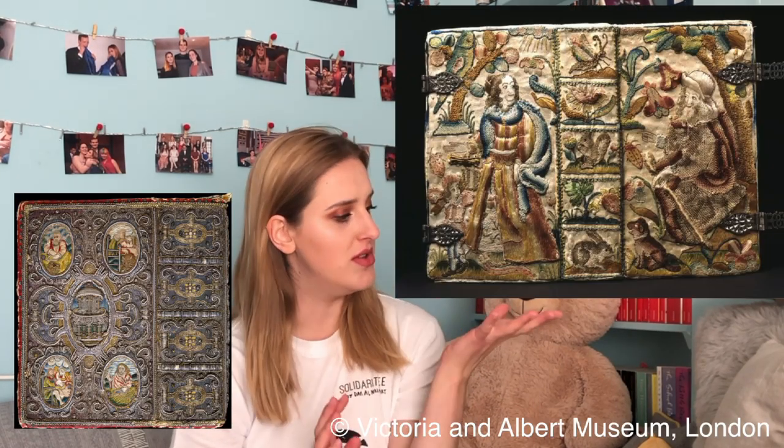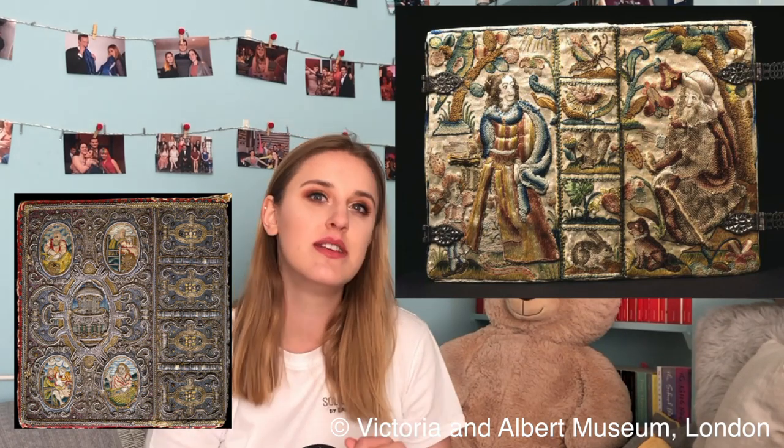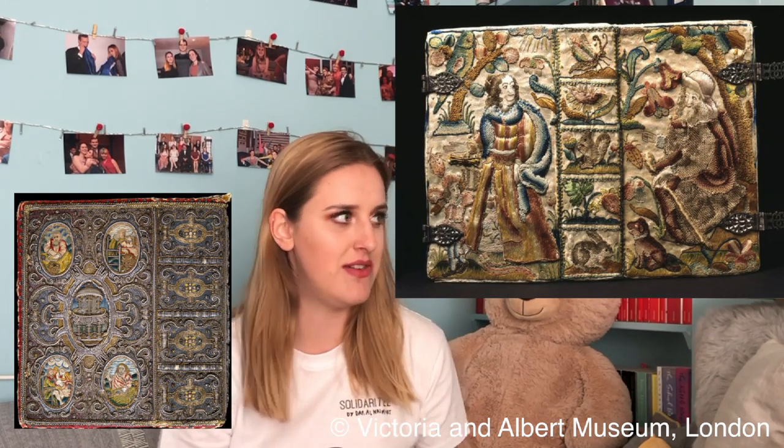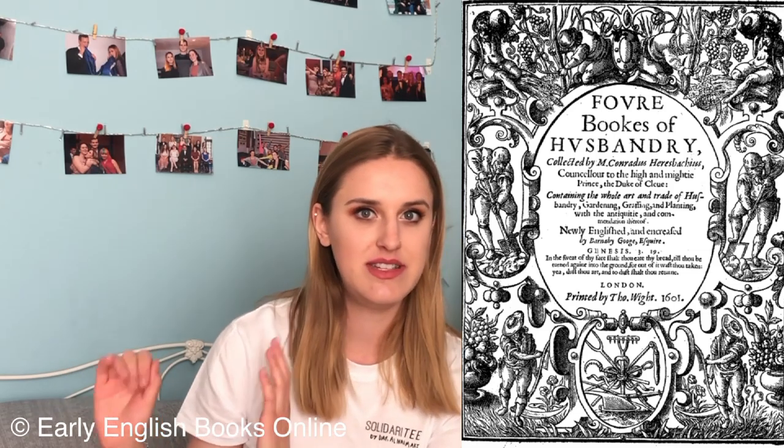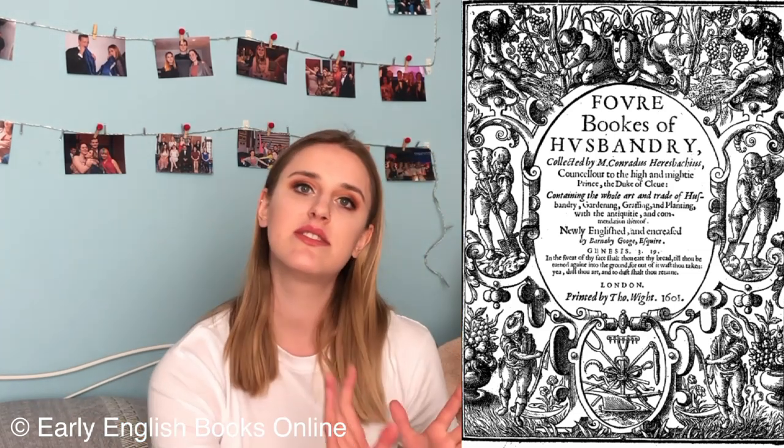Early modern books were really ornate beautiful things. Paper was really expensive so when you got a book you made it beautiful. For example, these ones have really beautiful fabric covers. When you bought your book you'd buy all the paper and it wouldn't necessarily be bound yet, so you'd go get your book bound. These are really beautiful embroidered book bindings — if you're wealthy, one way you could show it is by having embroidered book covers. Queen Elizabeth I had embroidered book covers herself. I want to talk about how we got from manuscripts to the early modern book through the invention of the printing press.